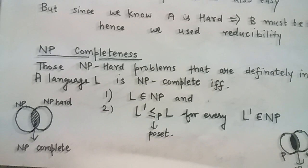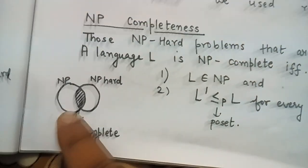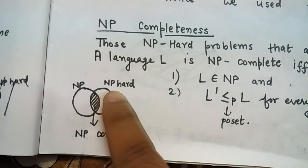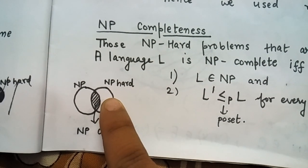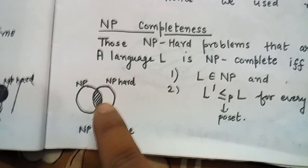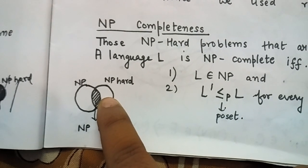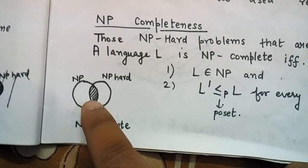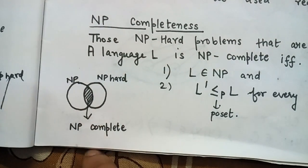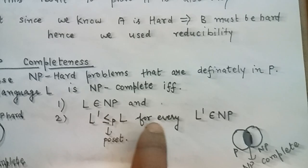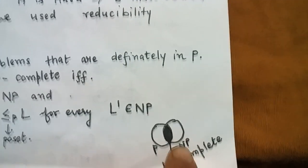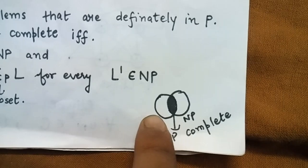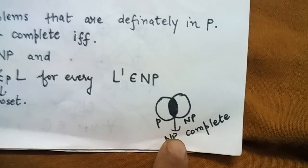Basically, you can understand this as: we have an NP problem and we have an NP-hard problem — we discussed NP-hard in the last lecture. All those NP-hard problems that are also in NP are known as NP-complete, and by this we can see that all those NP-complete problems that are also in P are still NP-complete.